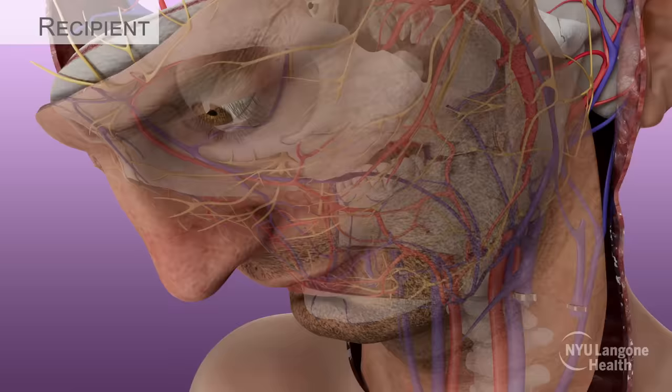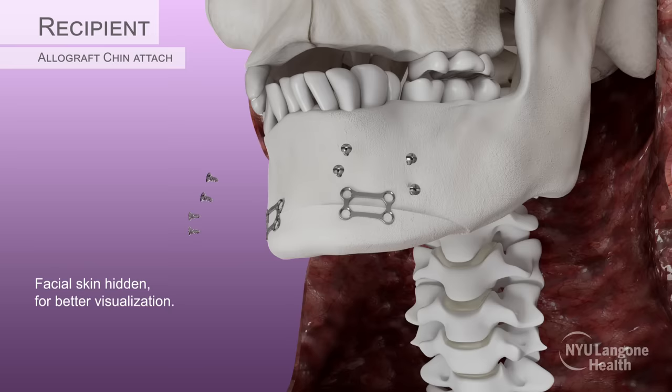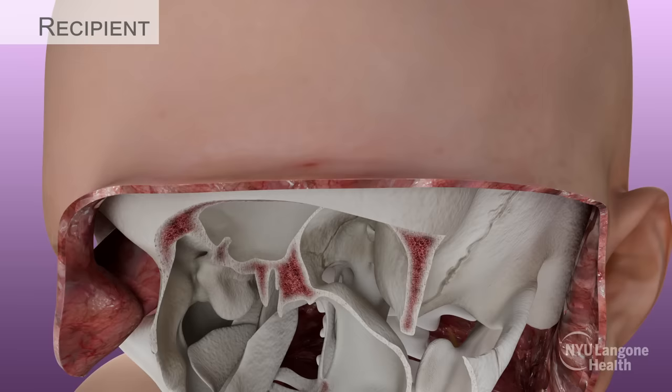The facial allograft was brought into its appropriate position, and rigid fixation was performed at the level of the chin using low-profile titanium plates and screws. The cut ends of the mental nerves were approximated at this time.